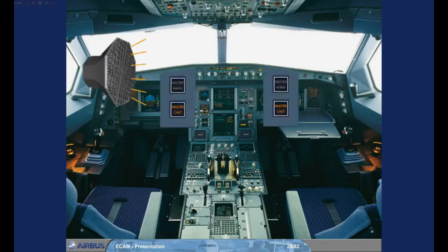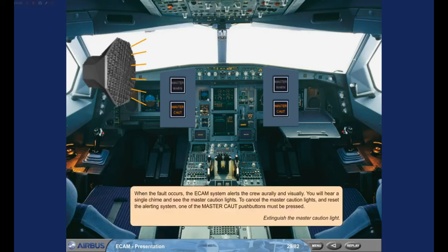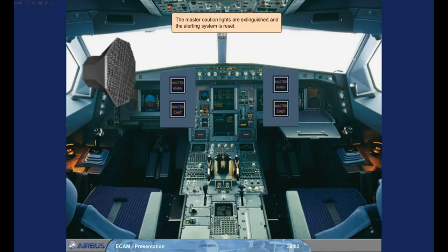When the fault occurs, the ECAM system alerts the crew orally and visually. You will hear a single chime and see the master caution lights. To cancel the master caution lights and reset the alerting system, one of the master caution push buttons must be pressed. Extinguish the master caution light. The master caution lights are extinguished and the alerting system is reset.